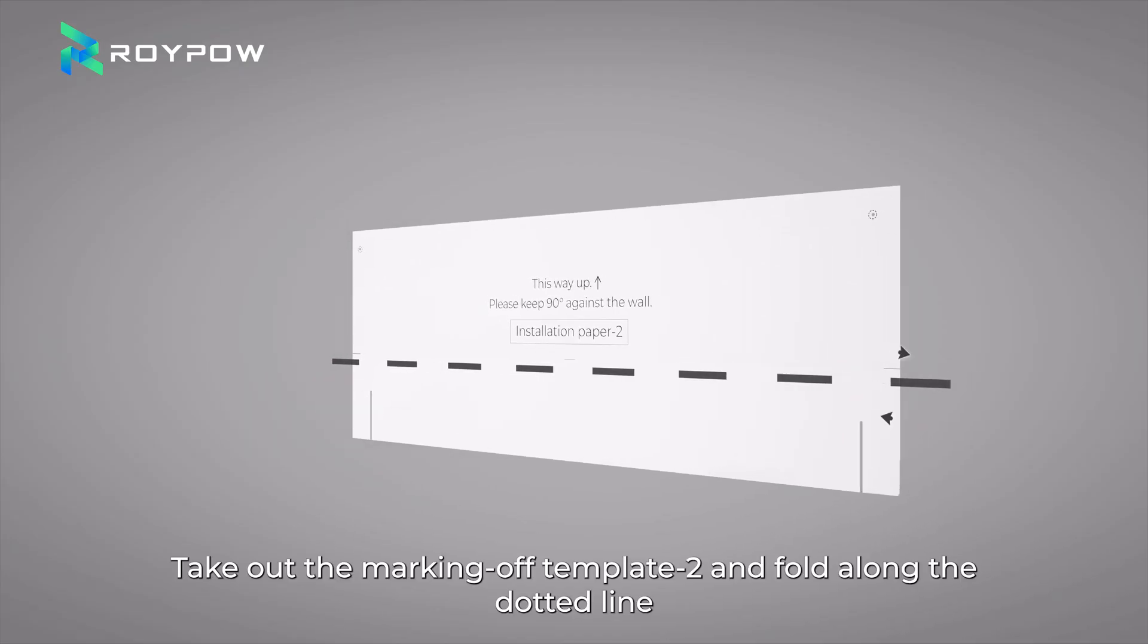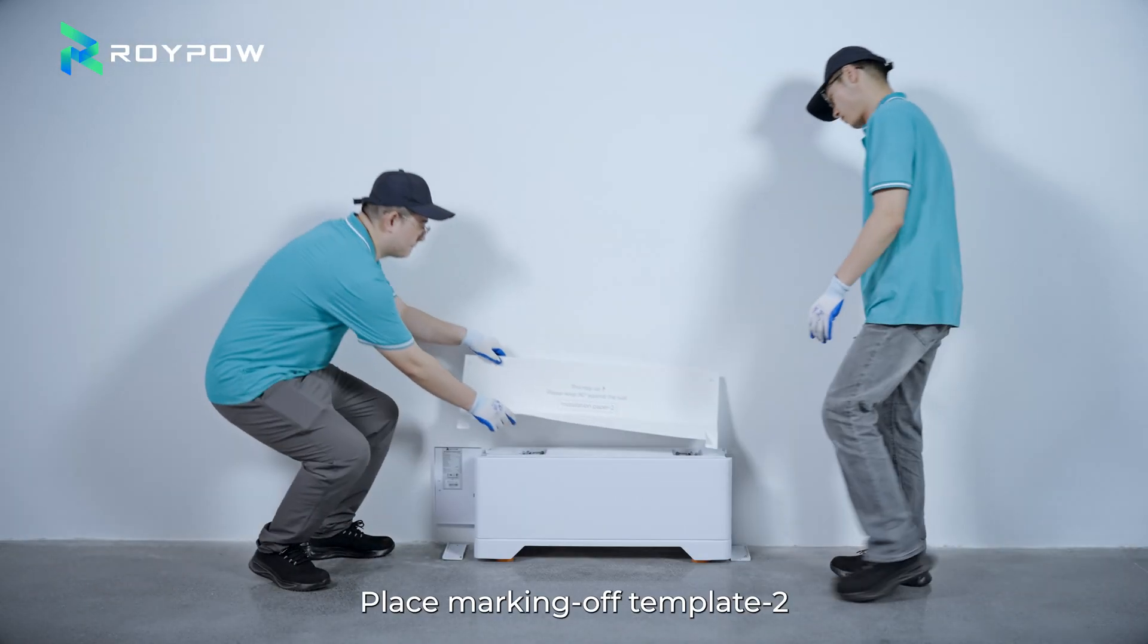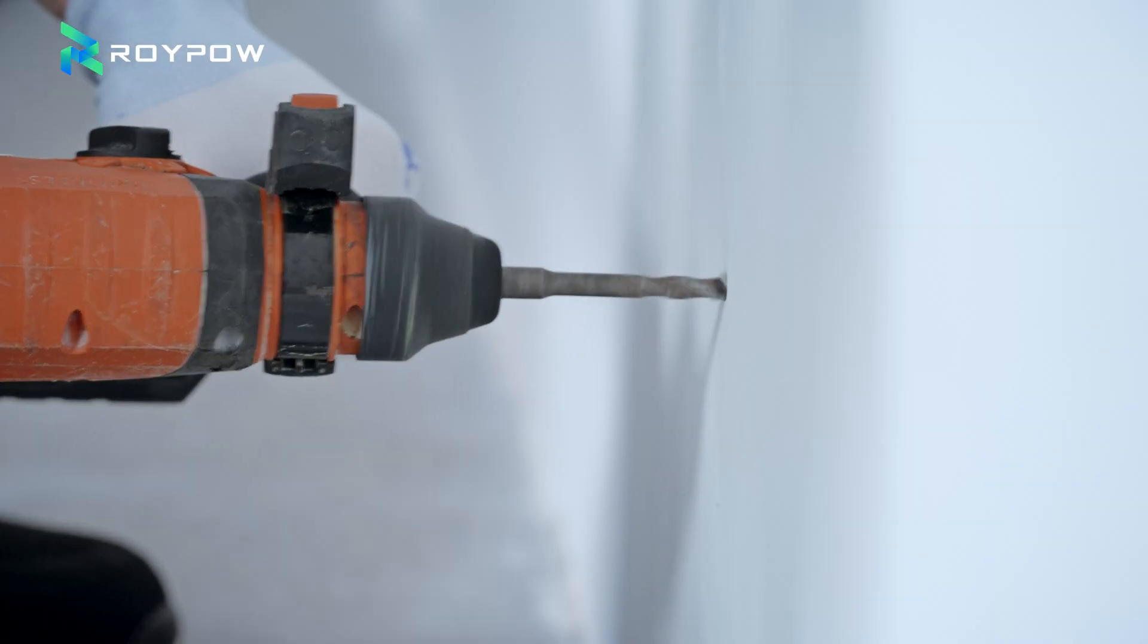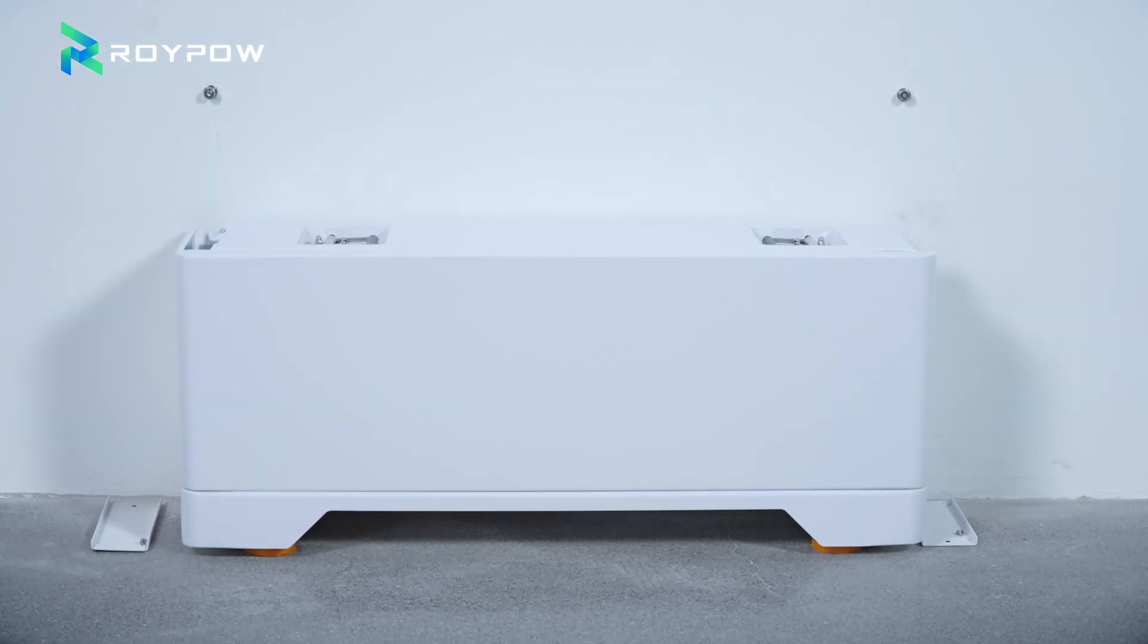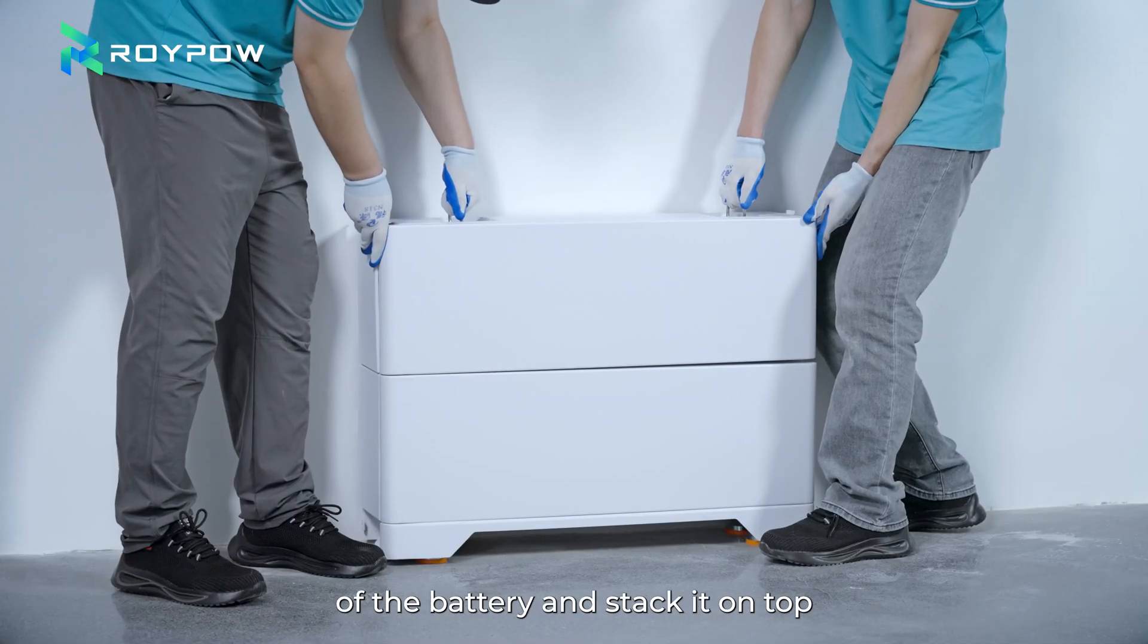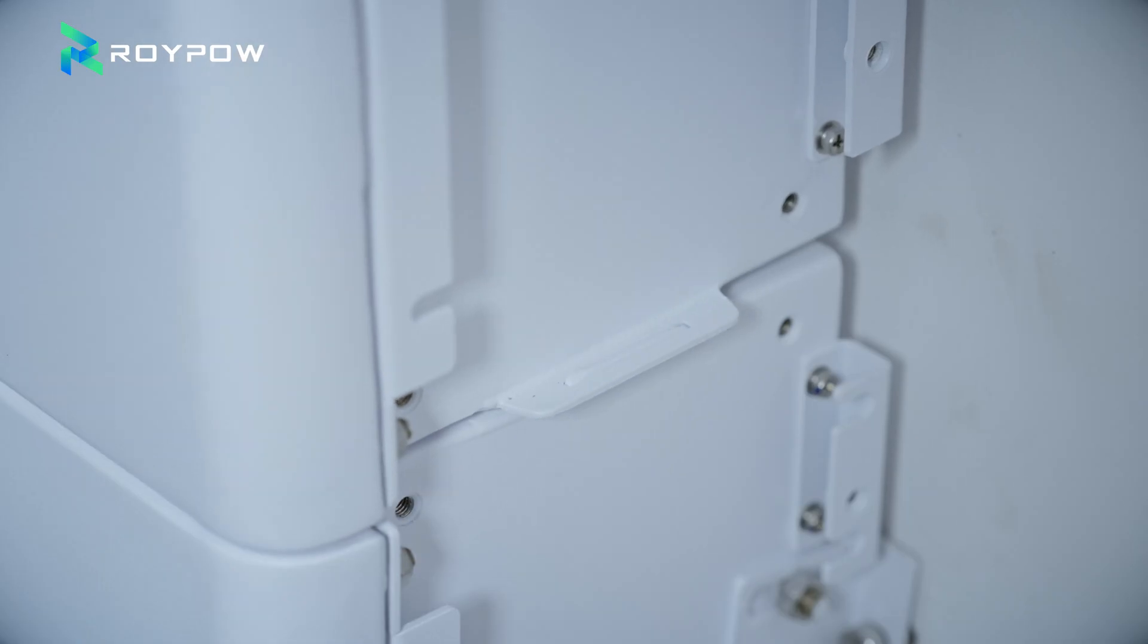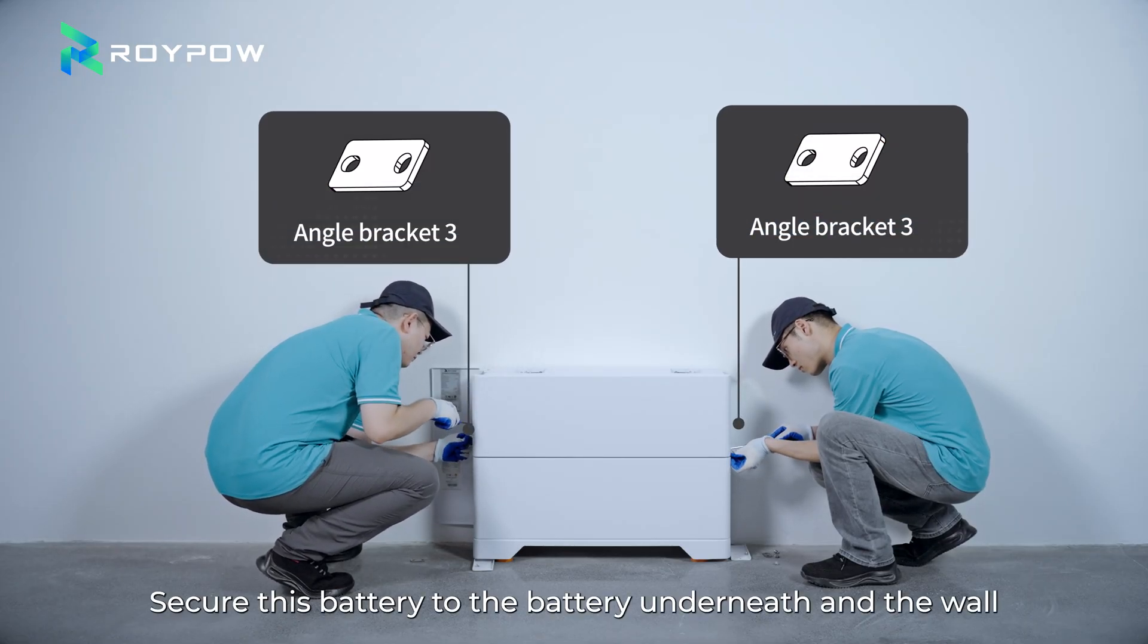Take out the marking off template 2 and fold along the dotted line. Place marking off template 2 on the battery and mark the positioning holes. Drill the holes and install the expansion bolts. Align the positioning holes on both sides of the battery and stack it on top. Secure this battery to the battery underneath and the wall.